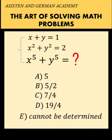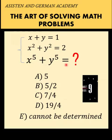Hi everyone, here's our math problem for today. We are given three equations in two unknowns, but we are not after the specific value for x or for y — we want to find the value of x to the fifth plus y to the fifth. You can pause the video and see if you can solve this problem.